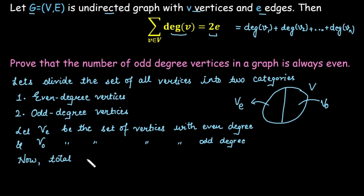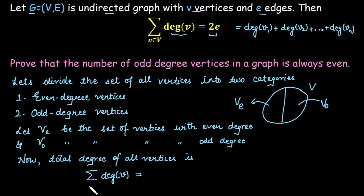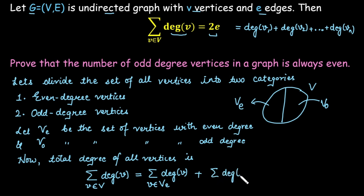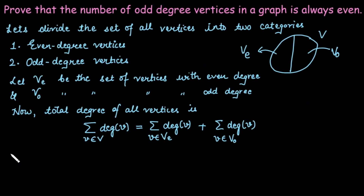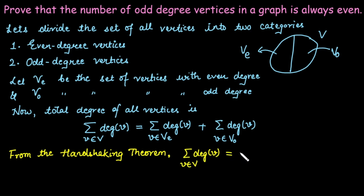The total degree of all vertices is the sum of degree of each vertex, which equals the sum of degrees of vertices in V_E (even-degree vertices) plus the sum of degrees of vertices in V_O (odd-degree vertices). From the handshaking theorem, the sum of degrees of each vertex equals two times the number of edges, and this is always an even number.